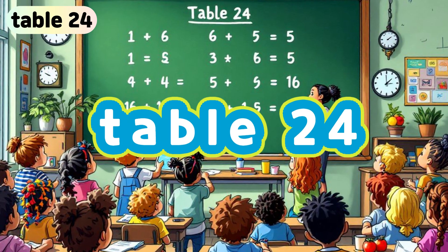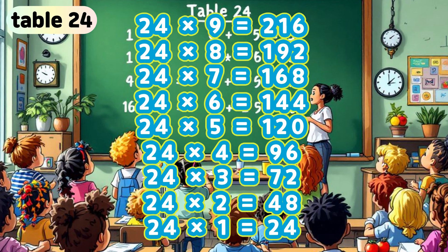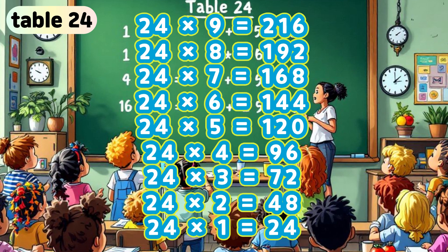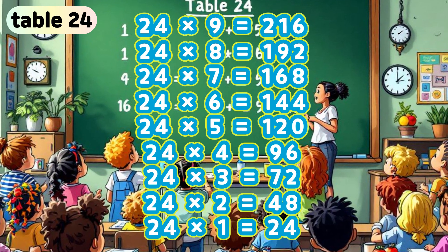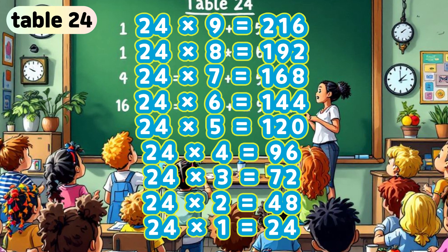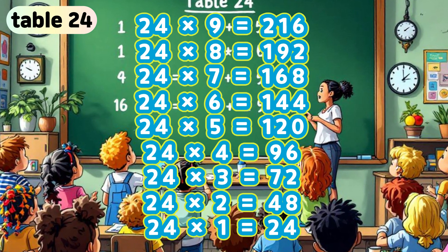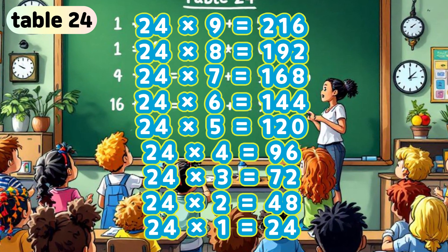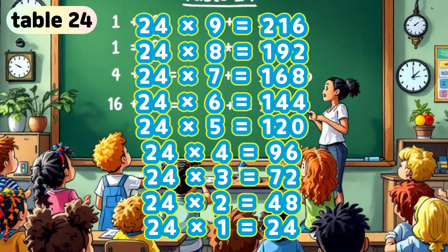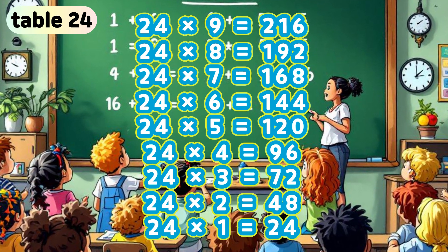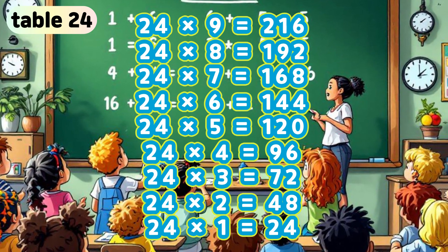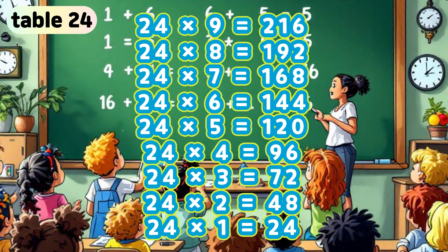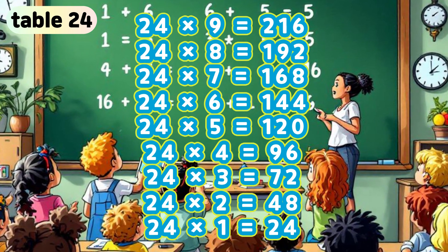Table 24. 24 times 9 is 216. 24 times 8 is 192. 24 times 7 is 168. 24 times 6 is 144. 24 times 5 is 120. 24 times 4 is 96. 24 times 3 is 72. 24 times 2 is 48. 24 times 1 is 24.